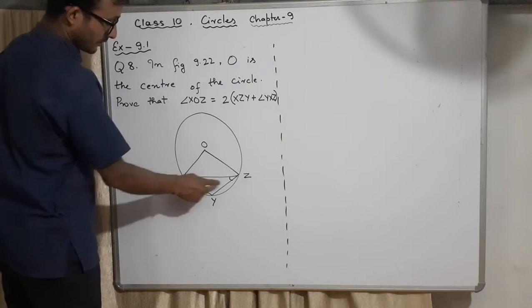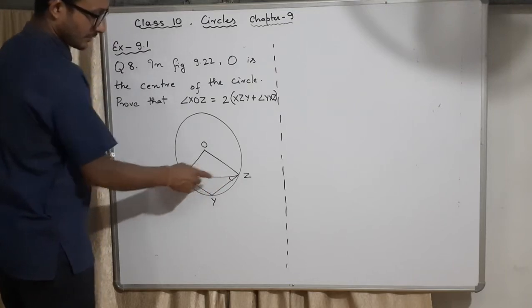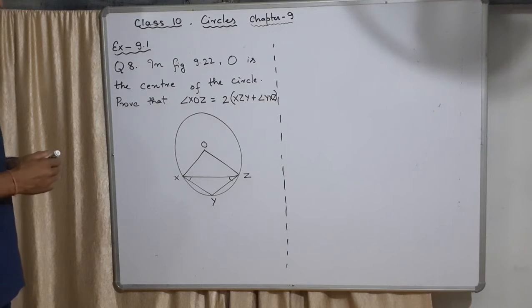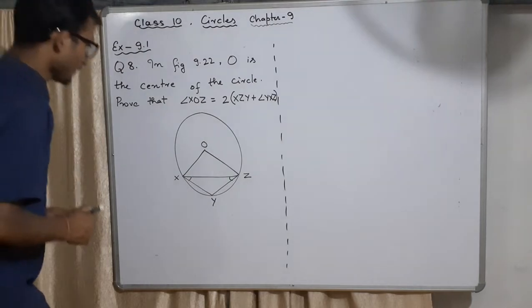∠XOZ has to be equal to 2 times (∠XZY plus ∠YXZ). These two marked angles, these two angles have to be there. So this is the thing you need to prove that such that they are equal. So let's start.